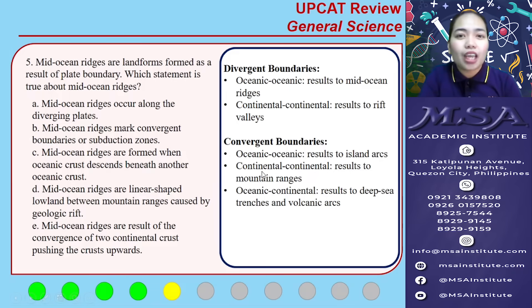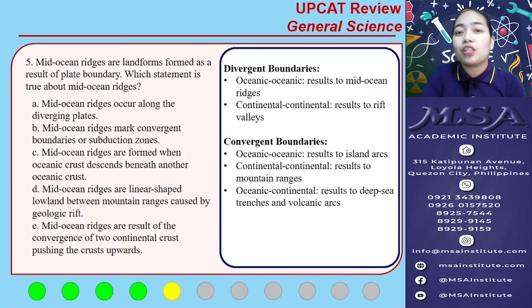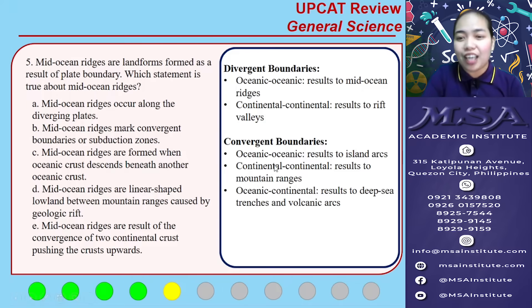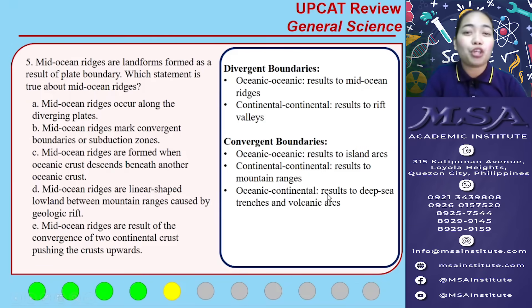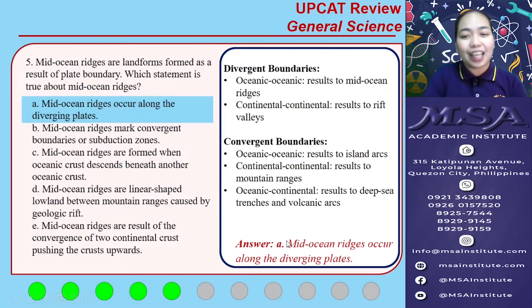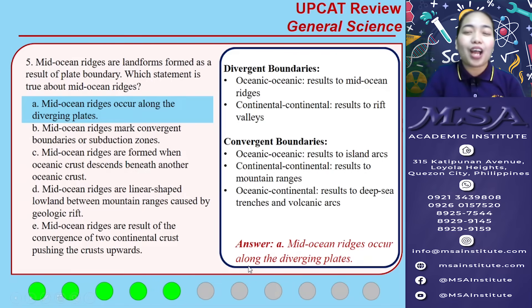On the other hand, convergent boundaries are when two plates move towards each other, and here are the landforms that can be formed. So for number 5, the answer is letter A: mid-ocean ridges occur along diverging plates.